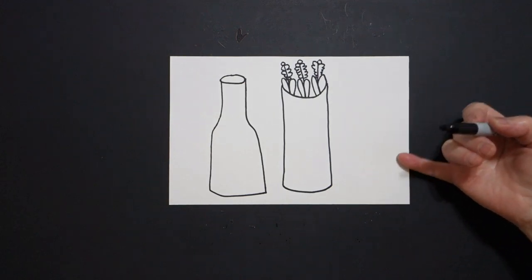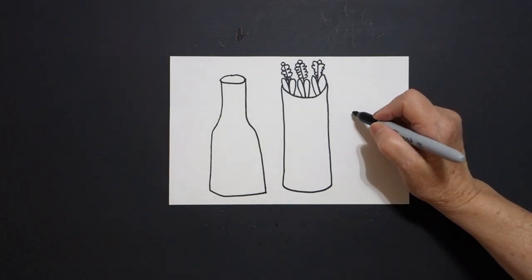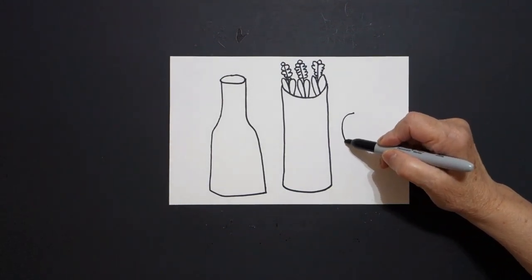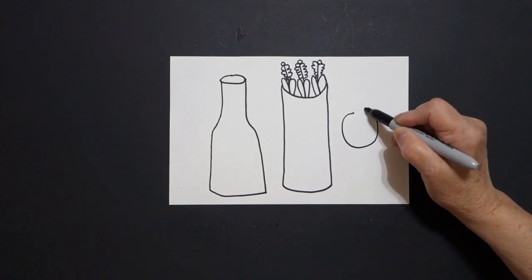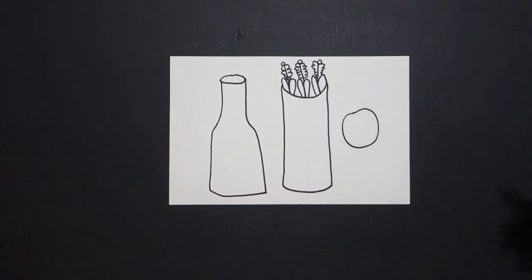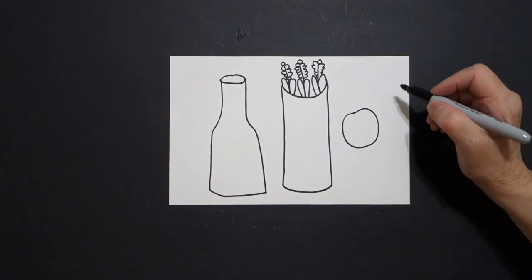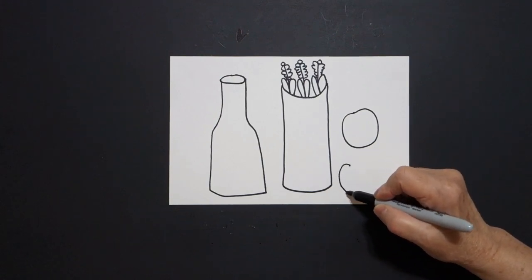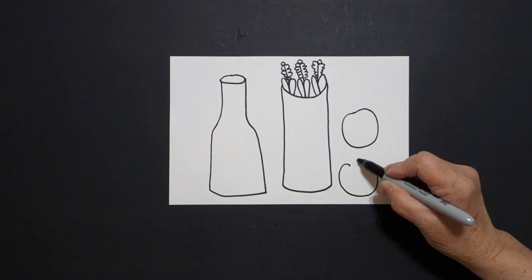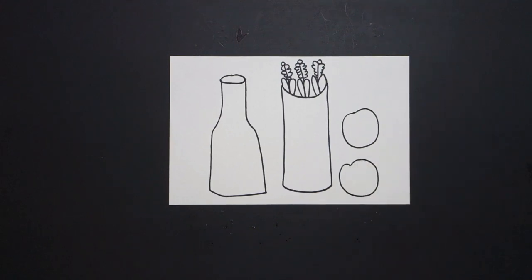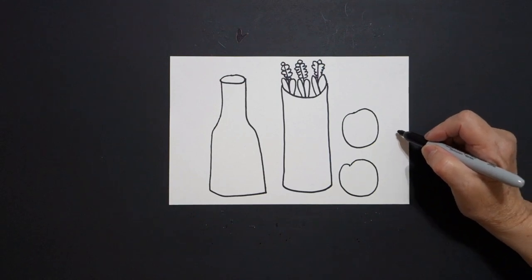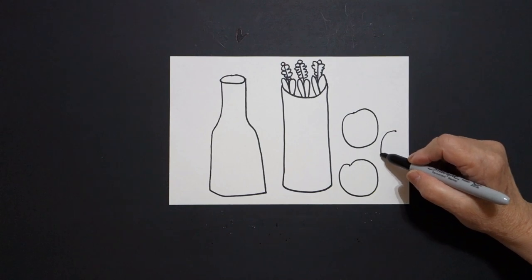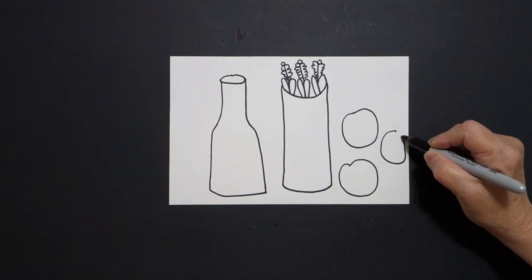Now I come over to this space right here. I'm going to pick a spot and put a dot. From that dot I'm going to draw a curved line down, up, around, connect. I'm going to pick another space and put a dot, draw a curved line down, around, up, connect. And I'm going to put one more — a little one right here. Put a dot, curve line down, around, up, and connect.